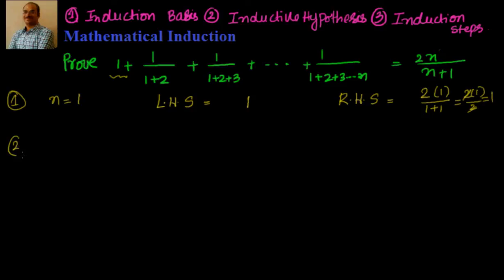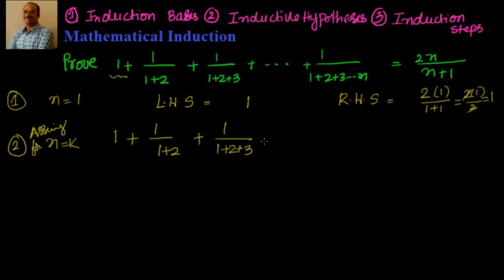Now Step 2: We assume the statement is true for n=k. So we assume: 1/(1+2) + 1/(1+2+3) + ... + 1/(1+2+3+...+k) = 2k/(k+1).